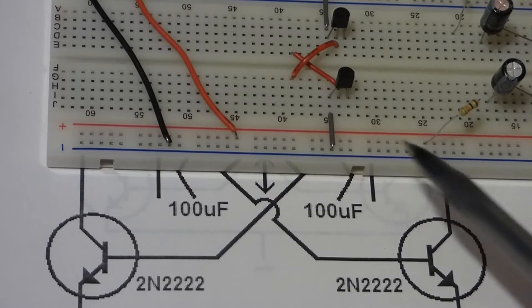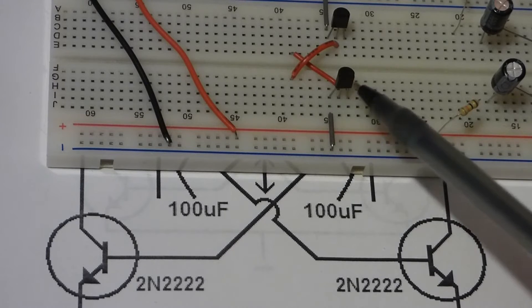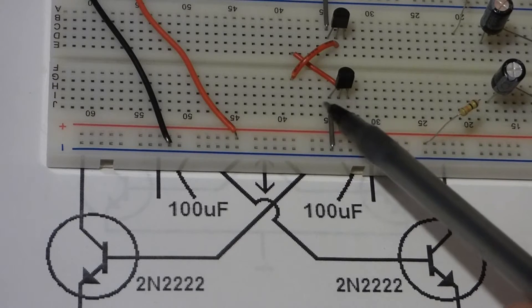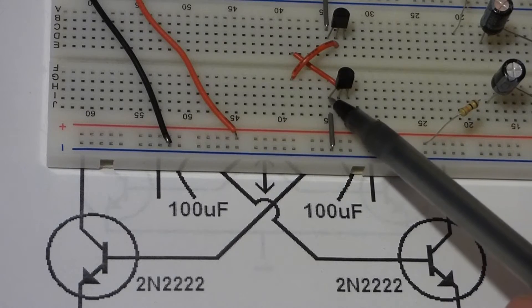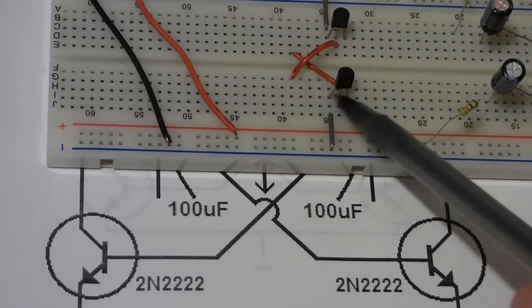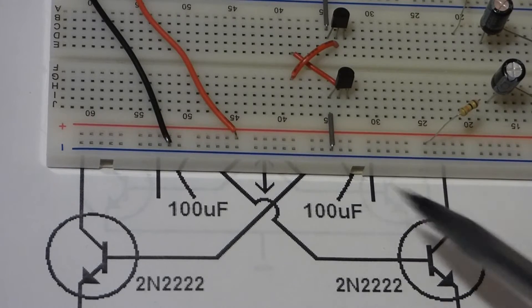So now I usually do the transistors first. They don't really spread out very well on the breadboard. It's best to keep the three leads in rows right next to each other.